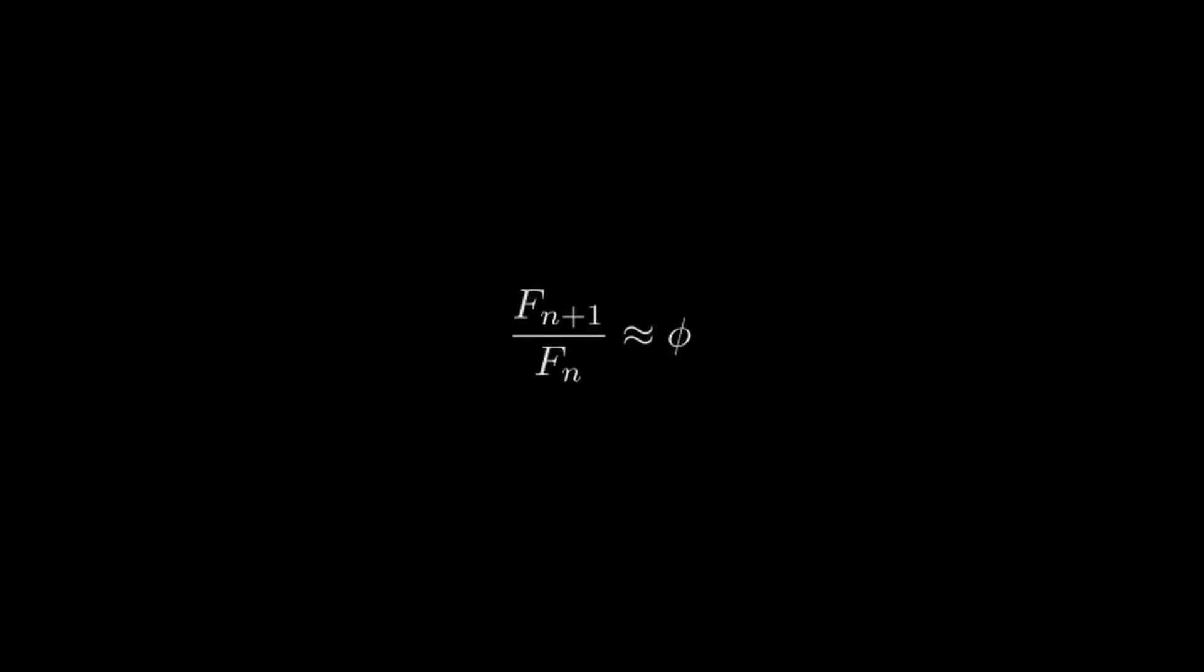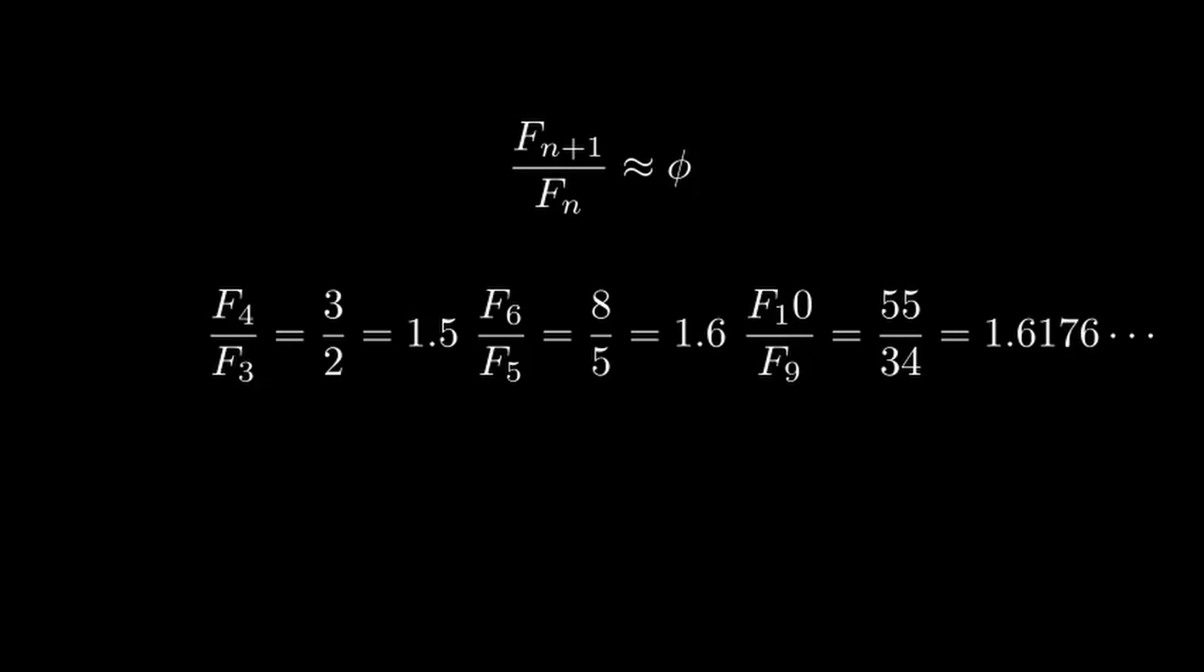You might have heard that if you divide two consecutive Fibonacci numbers, this value approaches the golden ratio, denoted phi. Here are a couple of examples, and they seem to be approaching a value of about 1.618. This fact is true and can be proven using limits.